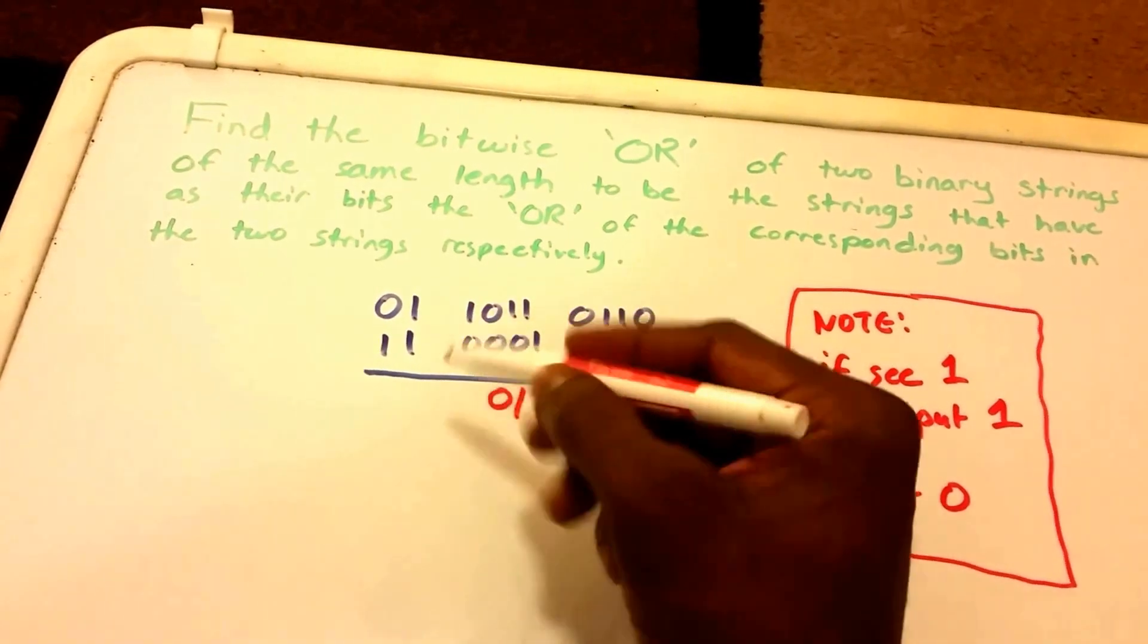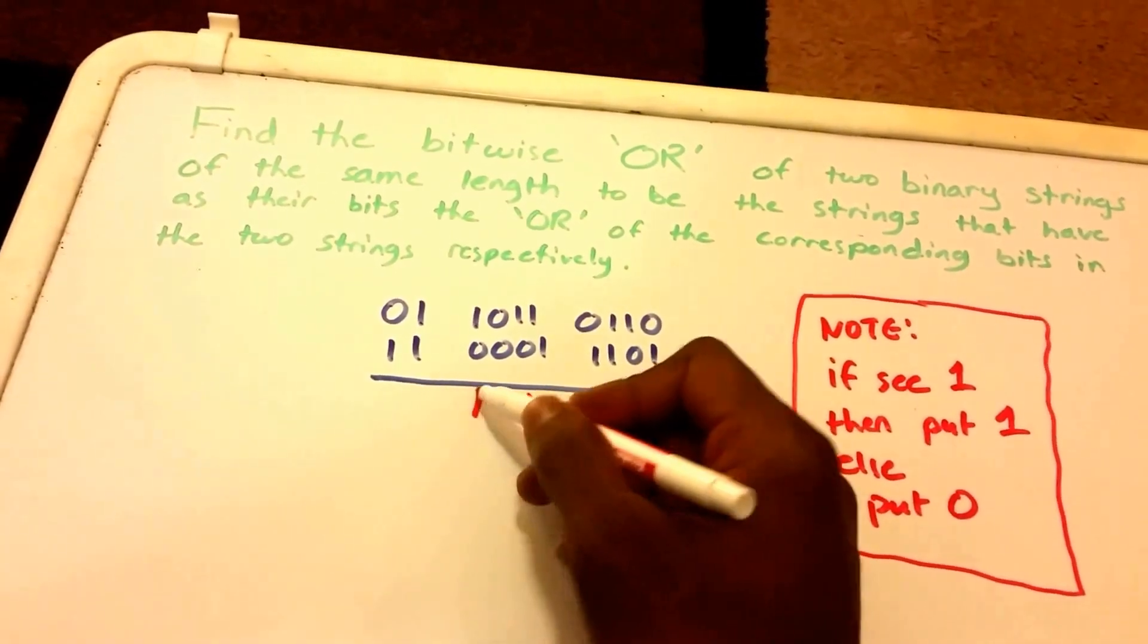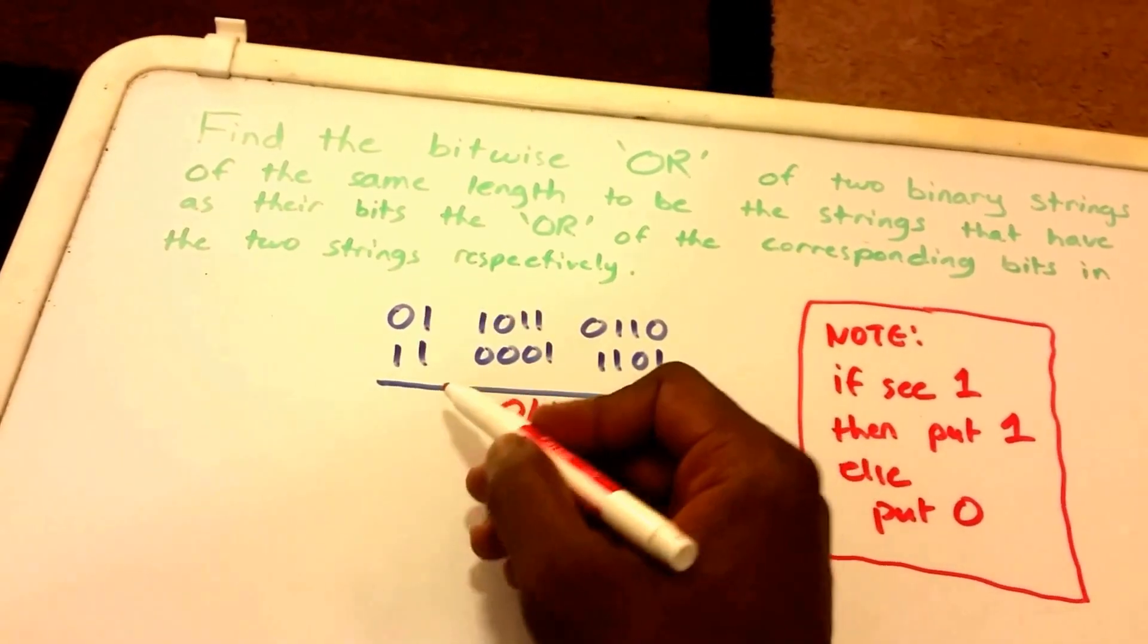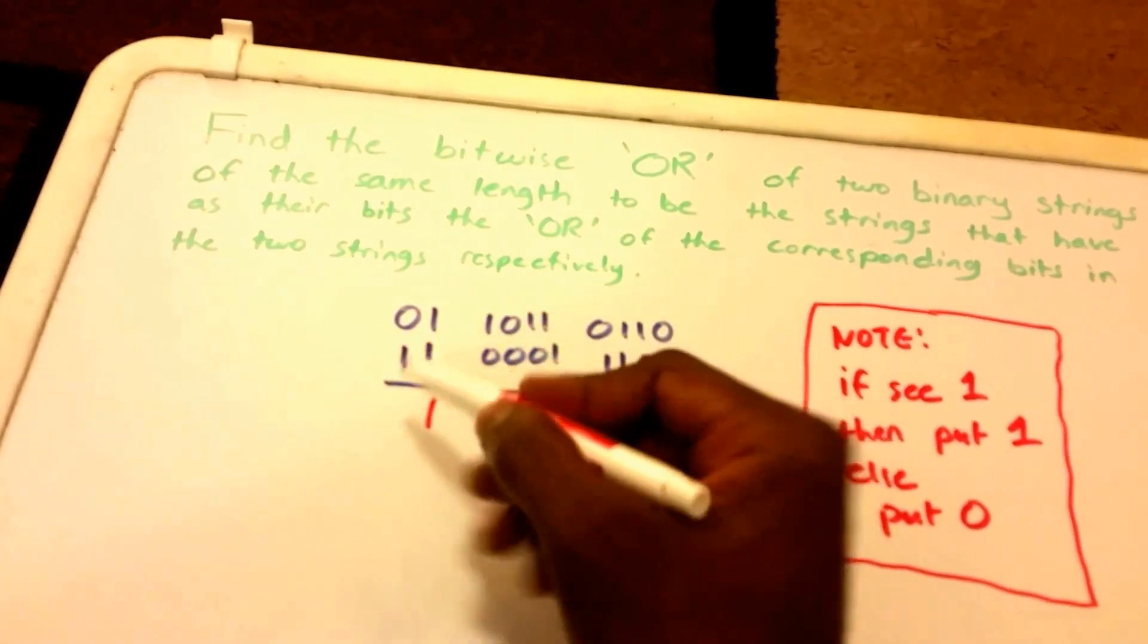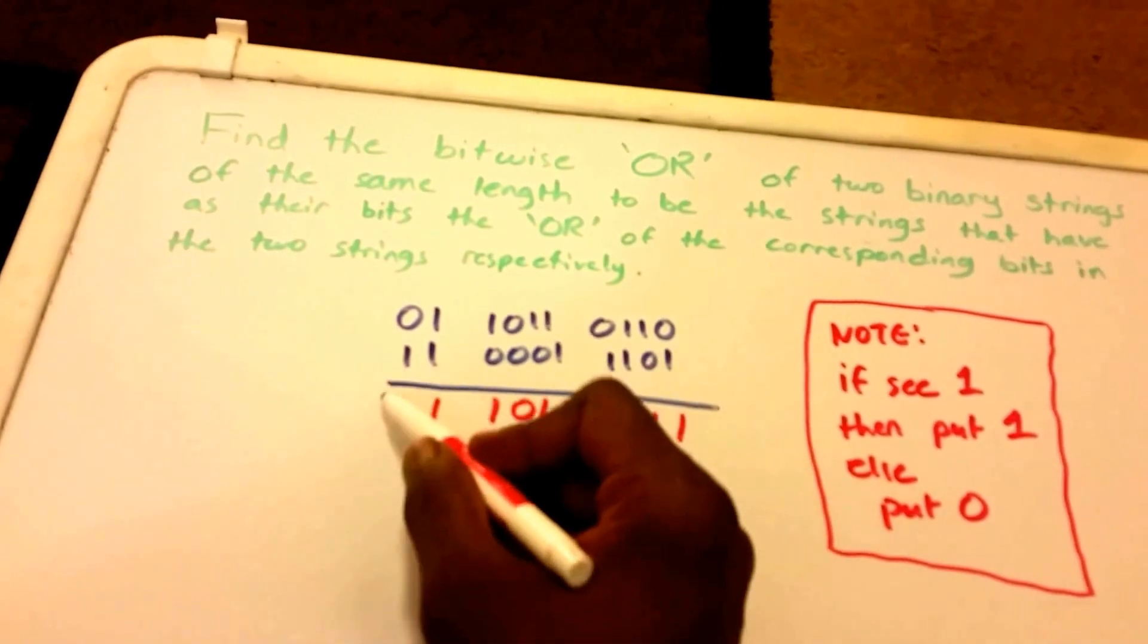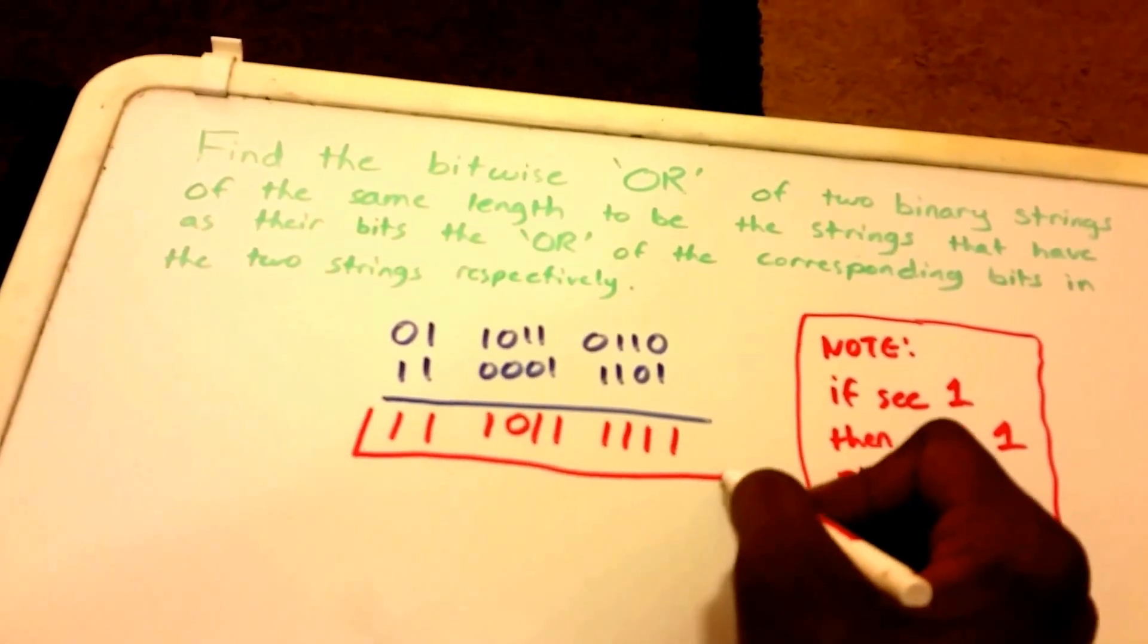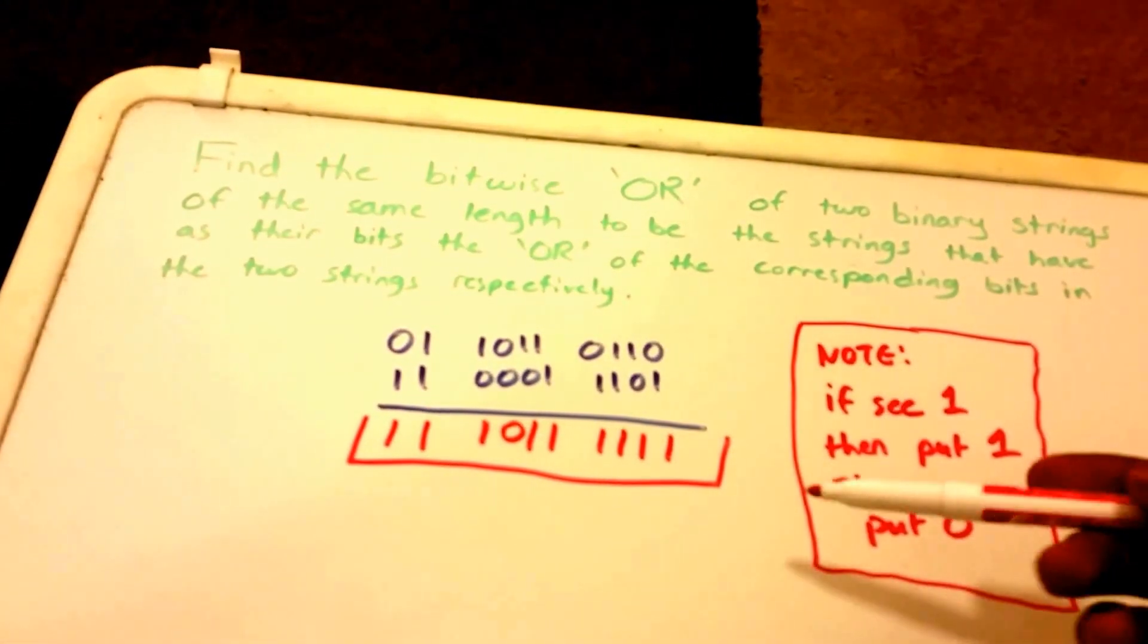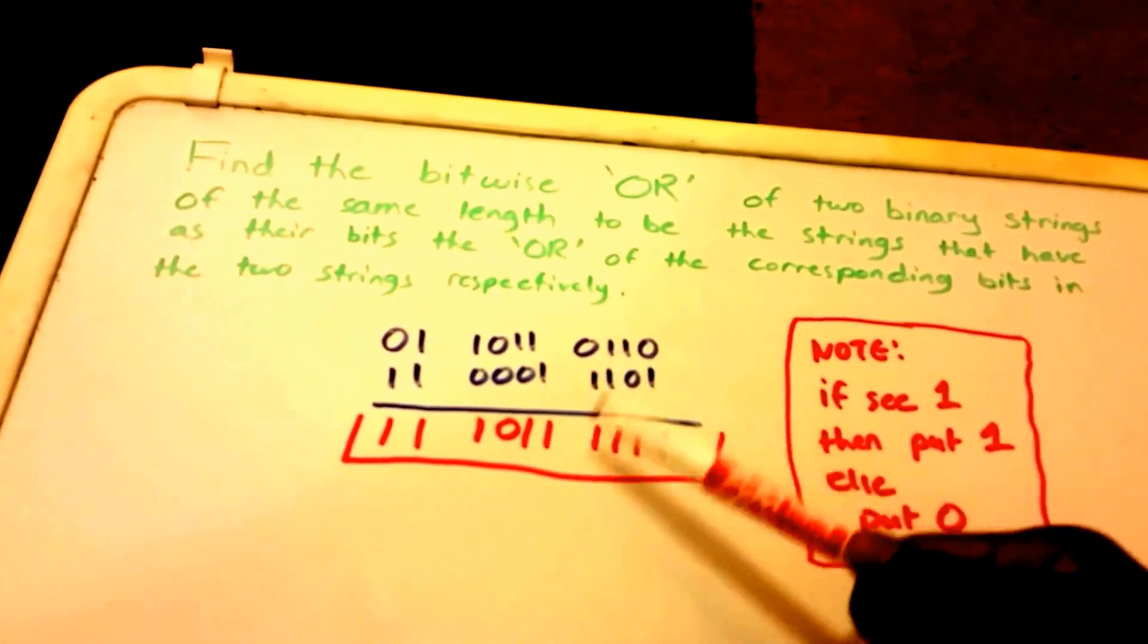We see a 1 here, 1, 0, so we're gonna put 1. 1, 1, we're gonna put 1. And 0, 1, we put 1. 1, 0. So this would be the answer or the bitwise OR of the two binary strings.